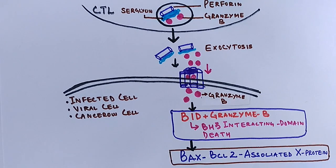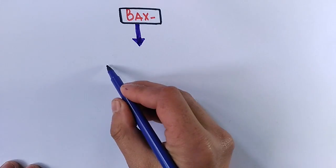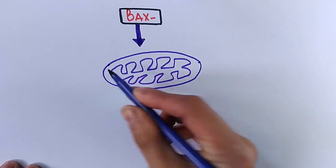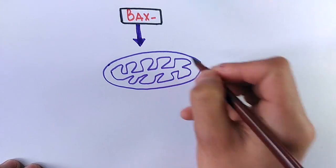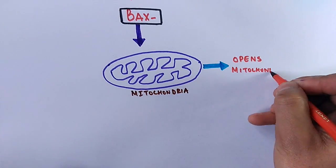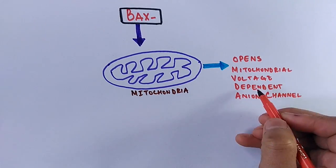BAX stands for BCL2 associated X protein, and this BAX has capability to enter into the mitochondrial intermembrane where it can initiate the release of cytochrome c complex or cytochrome c. So this BAX opens mitochondrial voltage dependent anion channel, that's VDAC.